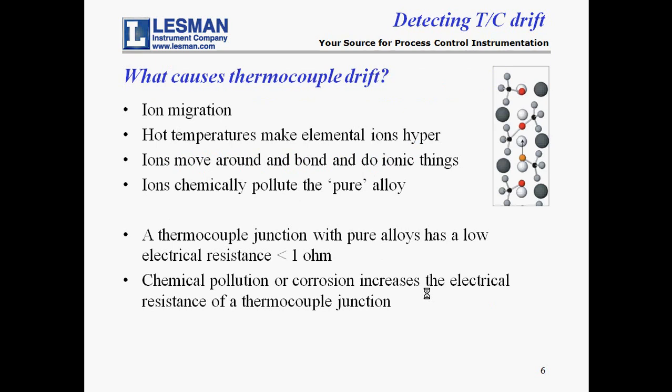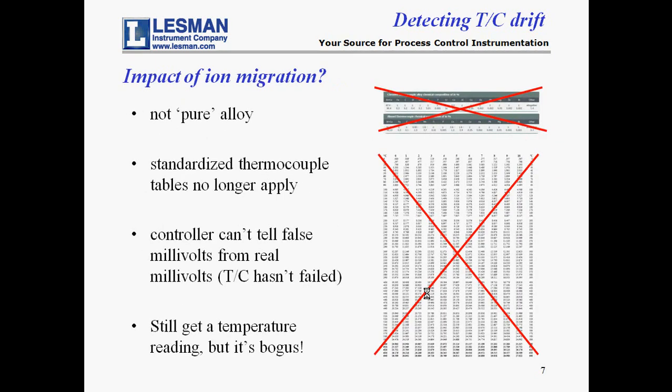Thermocouple drift is caused by ion migration, a form of corrosion. High temperatures excite ions in the protection sheath, the protection tube, or the atmosphere. These excited ions mix with the alloy metals, polluting the pure alloys at the thermocouple junction. The hotter the exposure temperature, the more quickly the ions pollute the alloys. The chemical change in the alloy metals also produces increased electrical resistance at the junction. In the K-type thermocouple example, the alloy metals are no longer pure chromel and pure alumel alloys, but are some unknown impure alloy of an unknown chemical makeup.